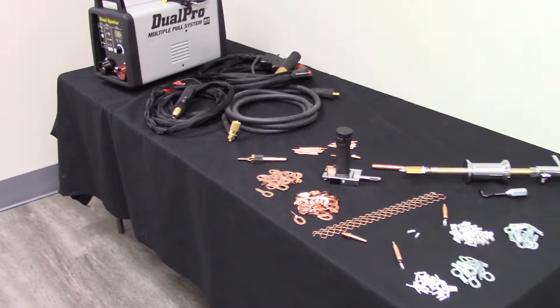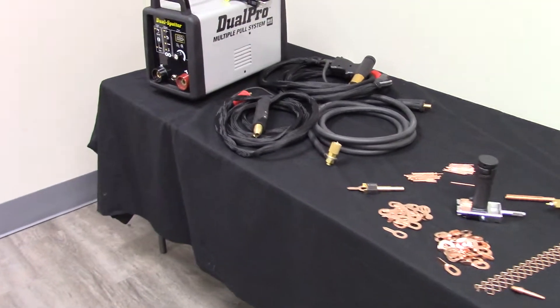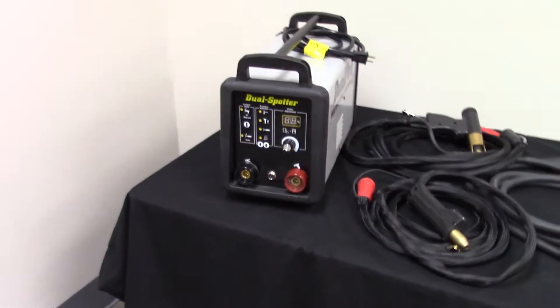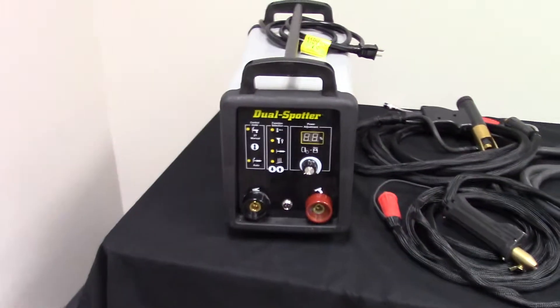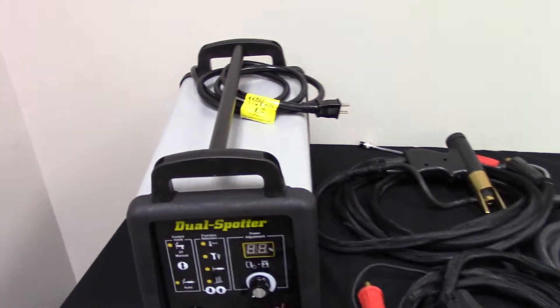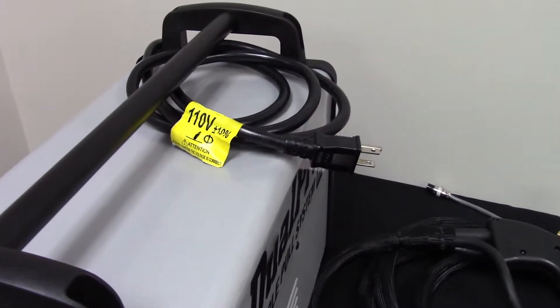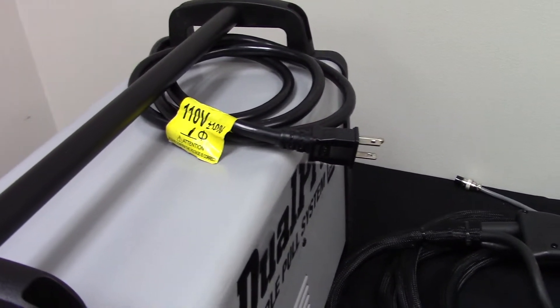This is H&S part number UNI 9802. One of the most important features of this system is that this unit operates off of single phase 110 and 115 volt common shop power.